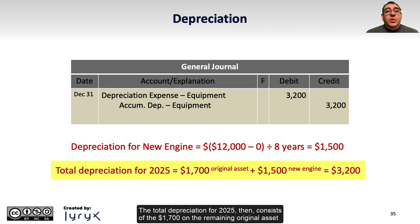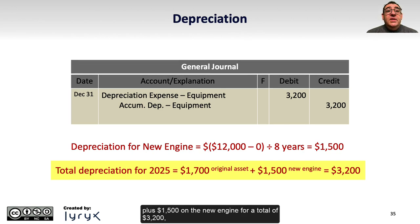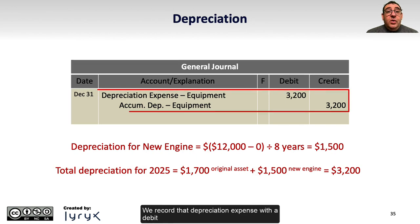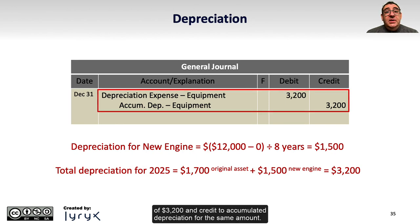The total depreciation for 2025 then consists of $1,700 on the remaining original asset plus $1,500 on the new engine, for a total of $3,200. We record that depreciation expense with a debit of $3,200 and a credit to accumulated depreciation for the same amount.